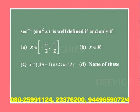The next question is: sec⁻¹(sin²x) is well defined if — Option A: x belongs to [−π/2, +π/2]; Option B: x belongs to ℝ; Option C: x belongs to (2n+1)·(π/2) for n belonging to integers; Option D: none of these.